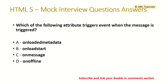Question 10: Which of the following attributes triggers an event when a message is received? Options: onloadedmetadata, onloadstart, onmessage, or onoffline. Here we are talking about progressive web apps, which have messages that are triggered. The answer is onmessage — whenever a new message arrives, this attribute triggers the event.